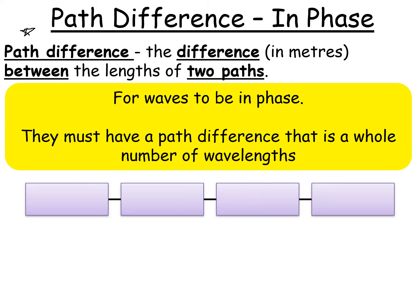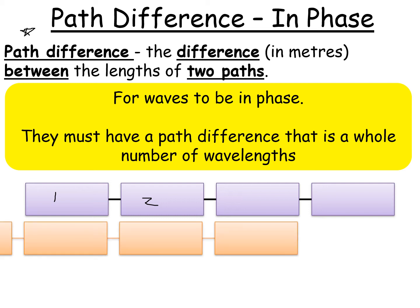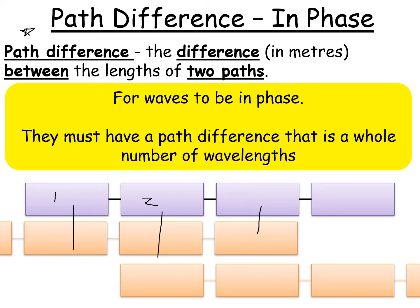One way to think about it is to use train carriages. Each carriage represents a wave — the crest and trough — and the carriages can be one out, but you can see they match up exactly. So there's a path difference of one carriage, or one wavelength, for the waves to be in phase. You can extend this idea: with another carriage, you can see there's still a path difference of one.